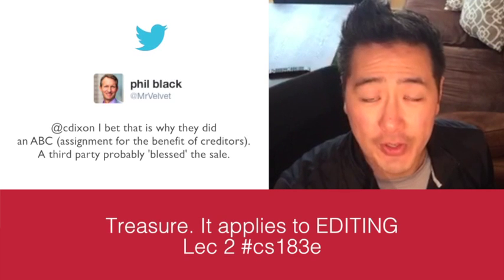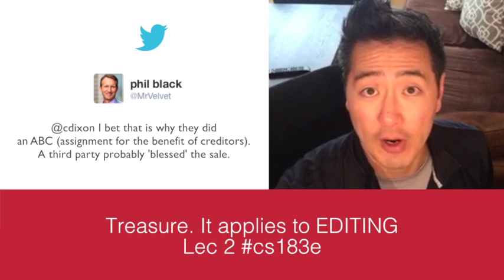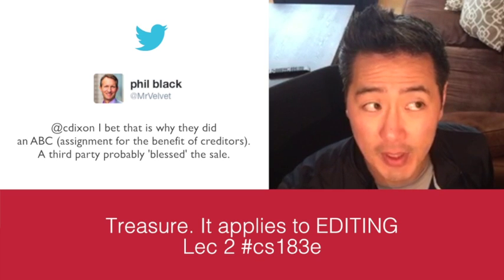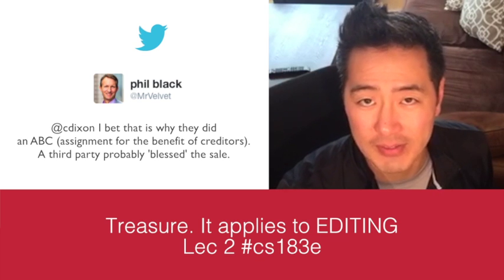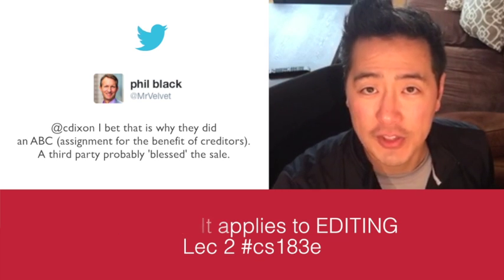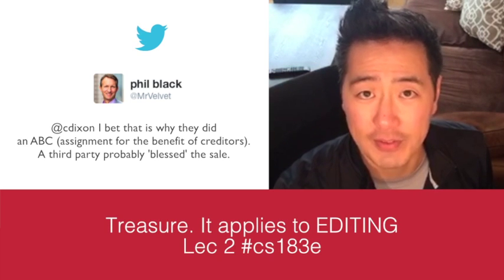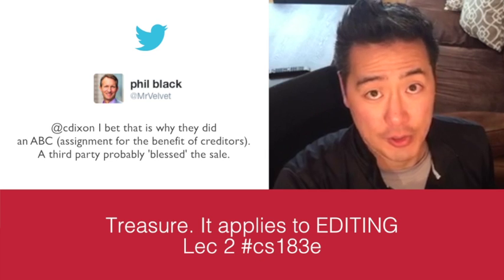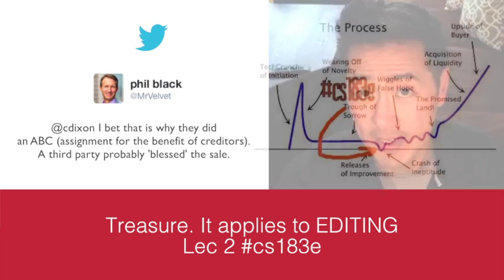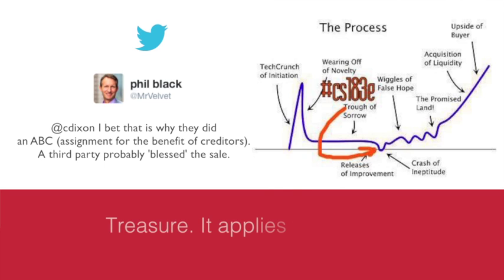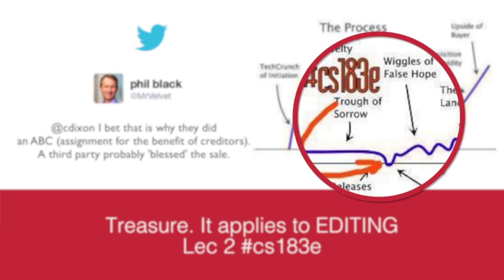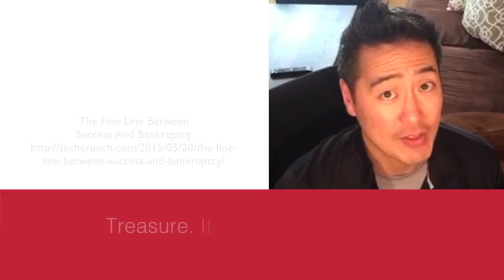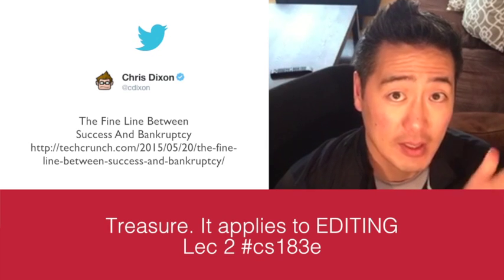Assignment for benefit of creditors — this is a large high-flying company called OnLive, O-N-L-I-V-E, downtown Palo Alto at 151 Linton Street. Andreessen Horowitz funded them. They shut it down and did an assignment for benefit of creditors. These types of nuances in and between your startup becoming massively successful or going bankrupt is a smidge of a difference. We are getting involved right at the smidge, right at the trough of sorrow. Lecture 2, Treasure, is about delaying having to do an ABC — there's an incredibly fine line between bankruptcy and success.